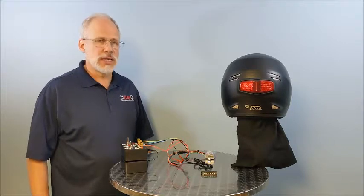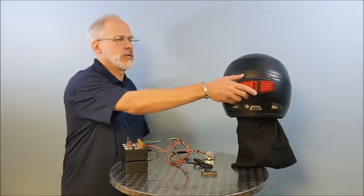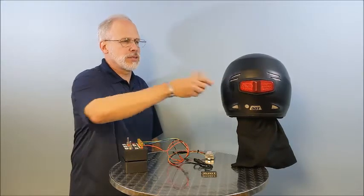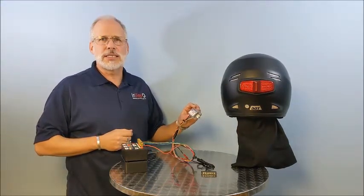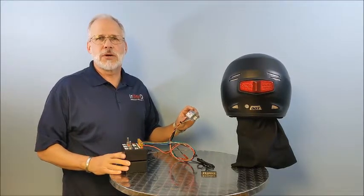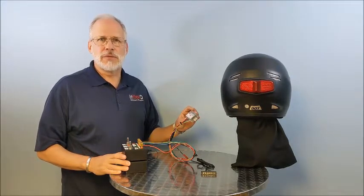One of the questions we often get asked is how does the motorcycle communicate with the helmet? The answer is through this unit here that ties into your motorcycle through five wires: switch power, ground, right, left, and brake.